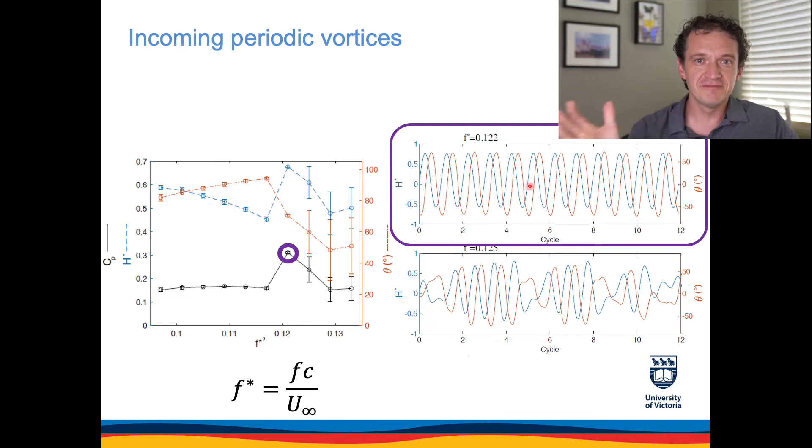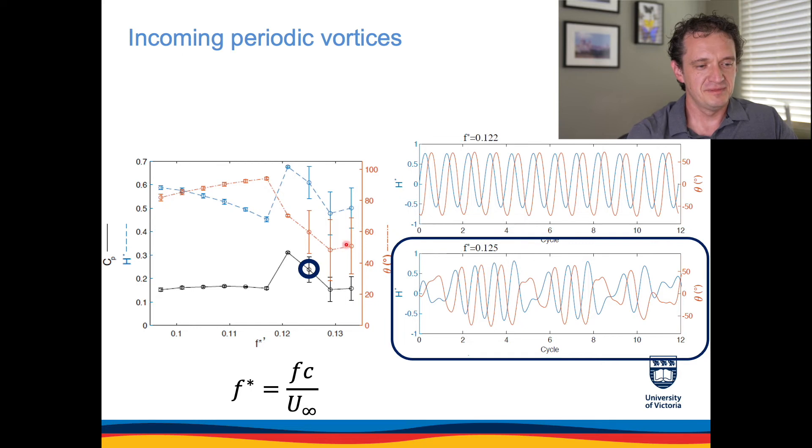These were not prescribed. The passive foil selected this oscillation regime by itself in response to the incoming flow conditions. But if we varied the reduced frequency of the incoming vortices or the reduced frequency of the upstream foil which produced the apparent inflow conditions for the passive foil just slightly and consider this symbol in the power curve right here, you can see that the response of the passive foil is much more chaotic. There are these regions where it would go into the quasi-periodic oscillations for a while and then the synchronization between pitch and heave would break down and it would not produce much power and then it would try to synchronize again. So that's the response to periodic vortices.